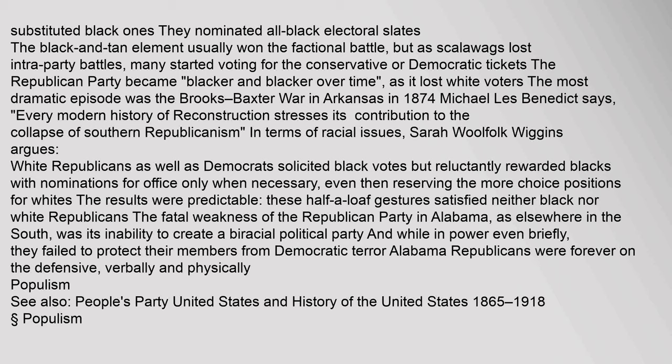Sarah Woolfolk Wiggins argues that white Republicans as well as Democrats solicited black votes but reluctantly rewarded blacks with nominations for office only when necessary, even then reserving the more choice positions for whites. These half-a-loaf gestures satisfied neither black nor white Republicans. The fatal weakness of the Republican Party in Alabama, as elsewhere in the South, was its inability to create a biracial political party, and while in power even briefly, they failed to protect their members from Democratic terror.